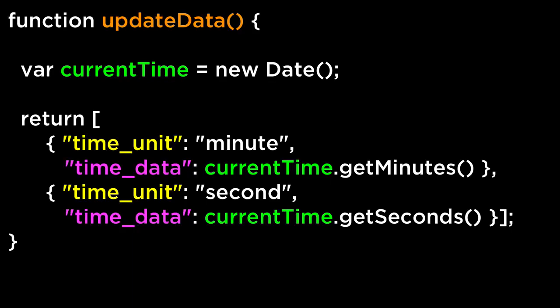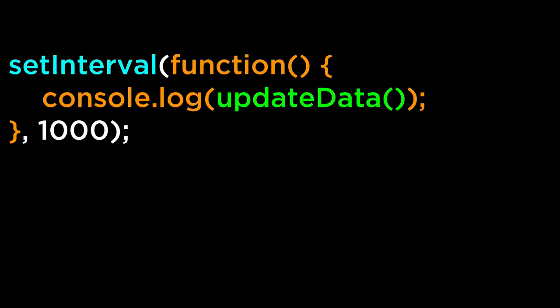We write a function named updateData. When called, it creates a new JavaScript date object and assigns it to the current time variable. The function then returns an array of JavaScript object literals. As the keys have quotes around them making them strings, we can refer to them as JSON objects. Each JSON object has a key of timeUnit and timeData. The first object has a timeUnit of minute and gets the current time's minutes; the second has a timeUnit of second and gets the current time's seconds. We can use the JavaScript window setInterval method to have the function run every 1000 milliseconds, and we write the returned value to the console using console.log.